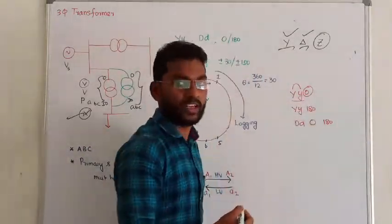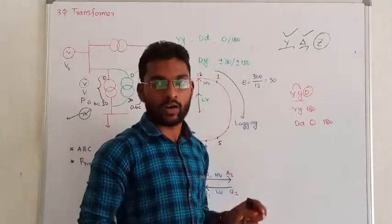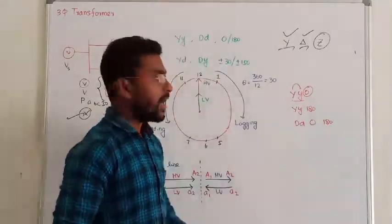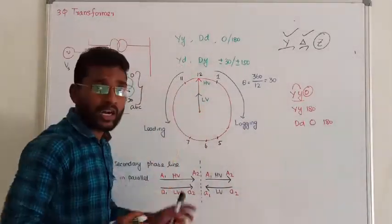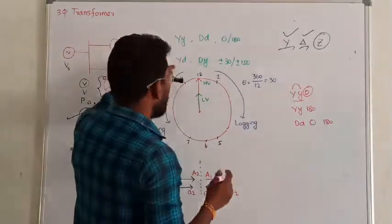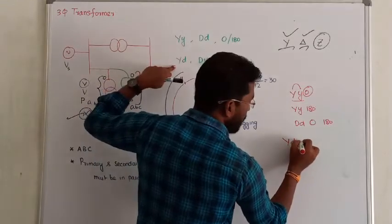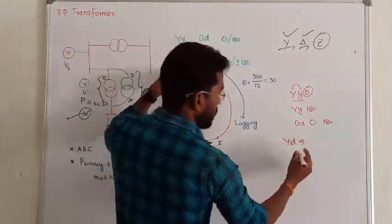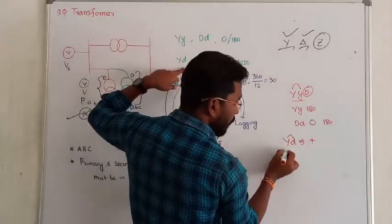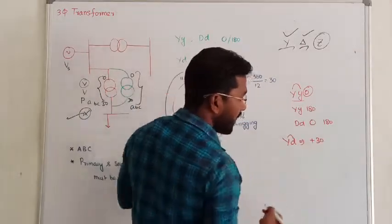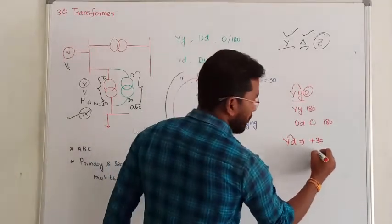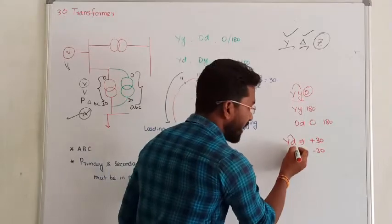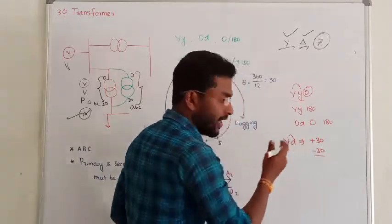In case of the same kind of windings — like star-star or delta-delta — only two phase differences are possible: zero and 180. Now, suppose you choose star and delta — there are also two combinations. For star-delta, primary and secondary would have a plus 30 degree shift, and another option is minus 30 degree, which means secondary is lagging primary.